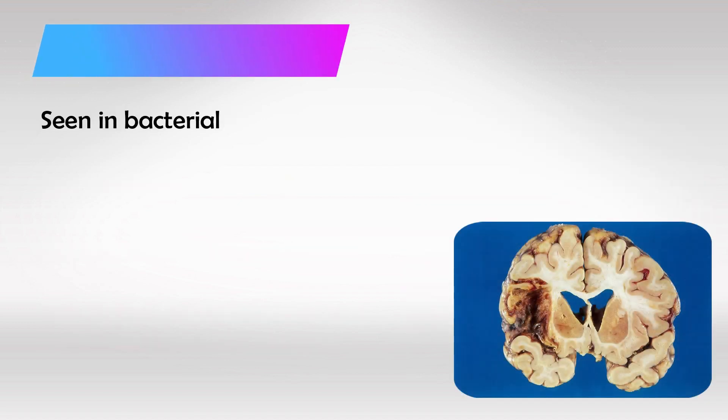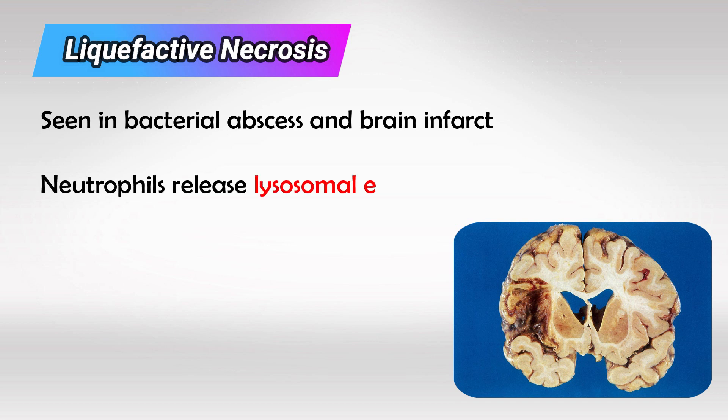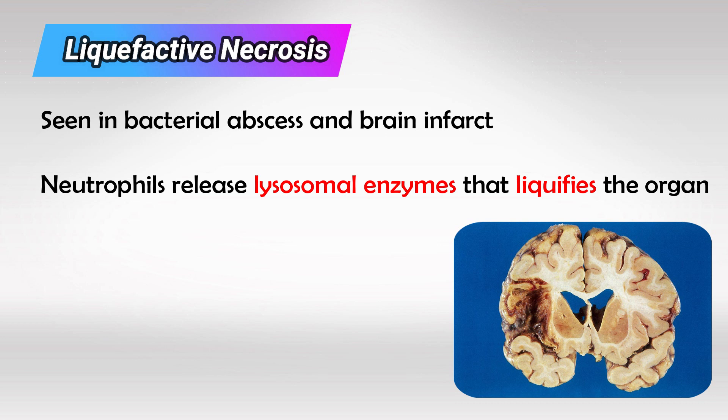The second type is liquefactive necrosis, and this involves more bacteria and watery material. We see it in bacterial abscesses and brain infarcts. In this type, neutrophils will aggregate and release a lot of lysosomal enzymes — digestive enzymes that will eat everything locally. So we're left with a big gooey or meshy component filled with dead cells, a lot of debris, and exudative material.